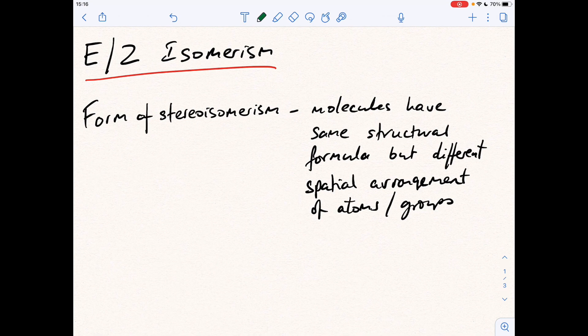So that occurs when you've got a carbon-carbon double bond and you have these different atoms or groups of atoms attached to each carbon of the double bond. So I'm going to put an X there, a Y there, a Z there, and a W there. So that's different to that, and that's different to that. So this generic molecule here can show E/Z isomerism.